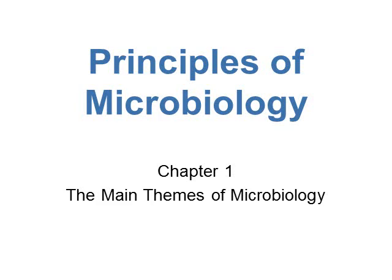This is part three of three on chapter one, the main themes in microbiology. In this part of the chapter, we're going to look at taxonomy, which is part of biology where we organize, classify, and name microorganisms. And then we're also going to look at the evolutionary relationships between these microorganisms.